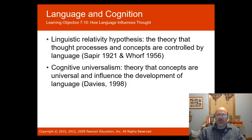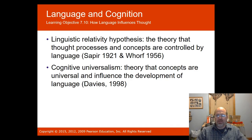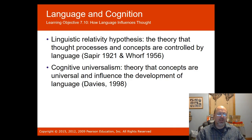A good book on this topic is 1984 by George Orwell, where the government tries to control the words people use to keep them from thinking in certain ways — controlling the population by controlling language. They talk about thought crimes. It's a good book — or you can see it on Netflix.